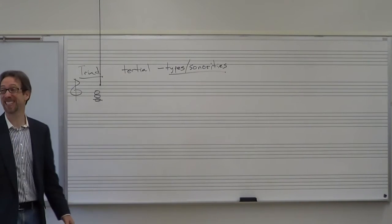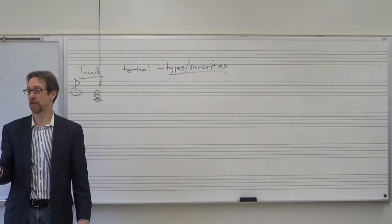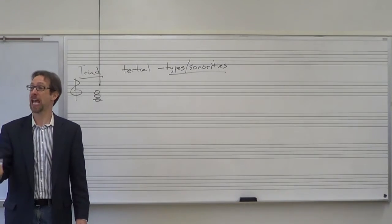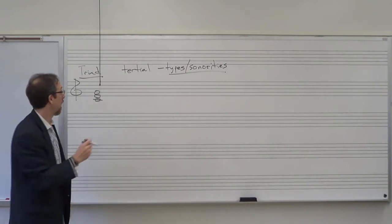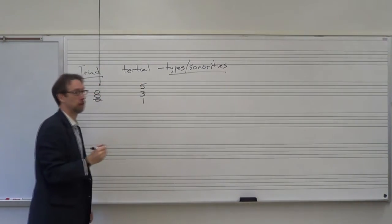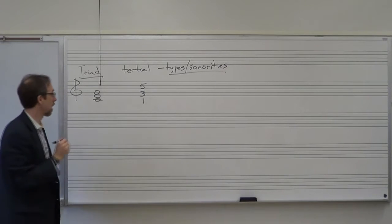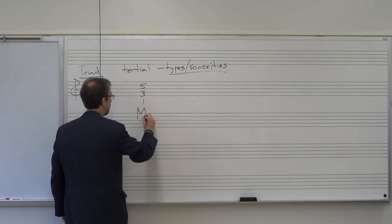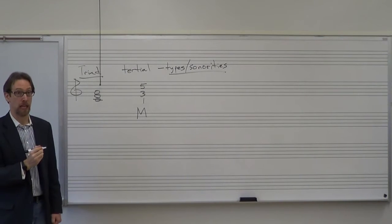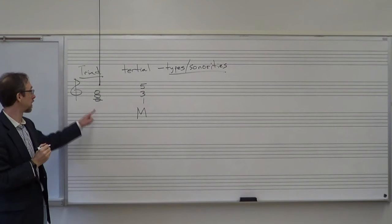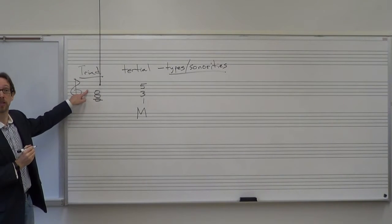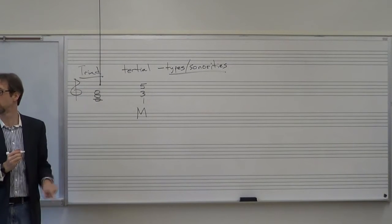We're going to use our scales to find our different triad types. If you take a major scale and take the first, third, and fifth note of a major scale, you will have a major triad. So in a C major scale, the first note is C, the third note is E, and the fifth note is G. So C, E, G is a major triad.